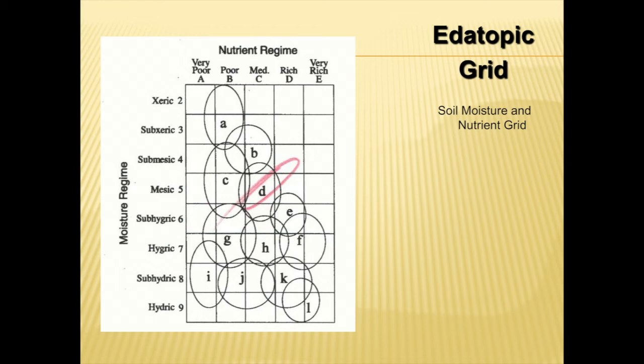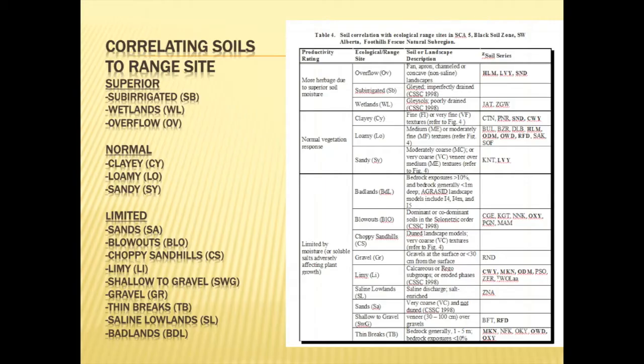On the forested landscape, we go directly to the ecological site using the moisture-nutrient grid and other things like indicator species.